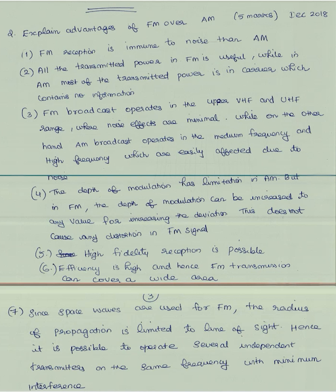In AM, most of the transmitting power is in the carrier which contains no information. One advantage of FM is that FM broadcast operates in the upper VHF and UHF range where noise effects are minimal, while AM broadcast operates in the medium frequency and high frequency bands which are easily affected by noise. Also, the depth of modulation has a limitation in AM but in FM the depth of modulation can be increased to any value.